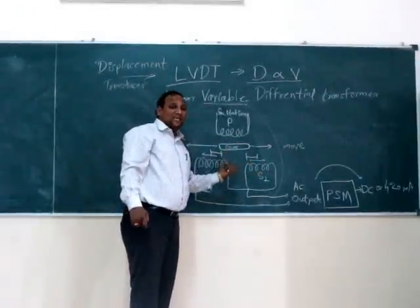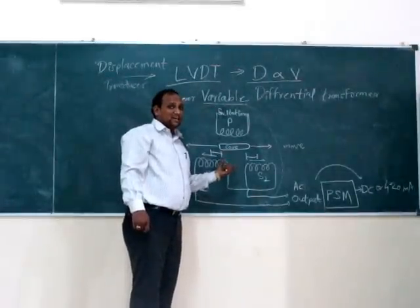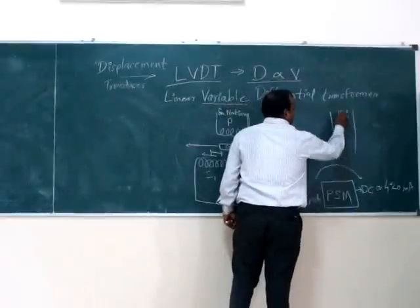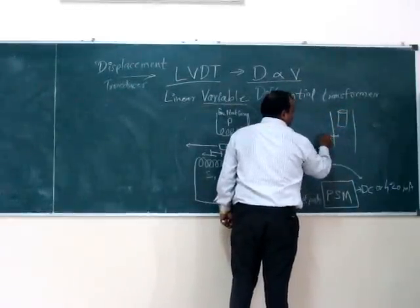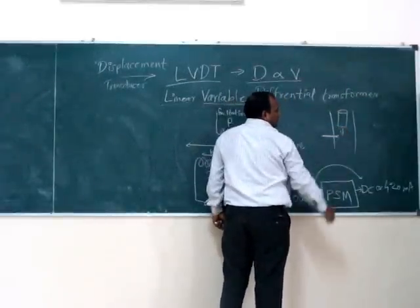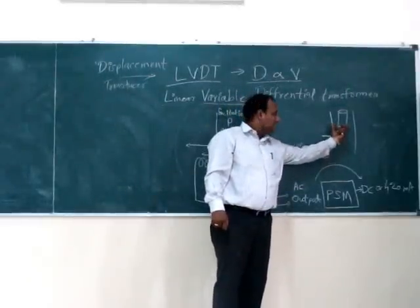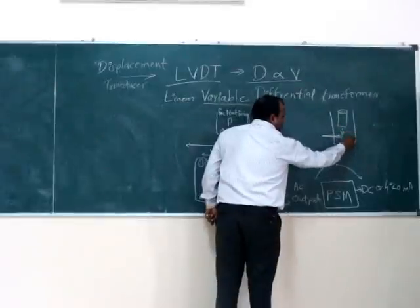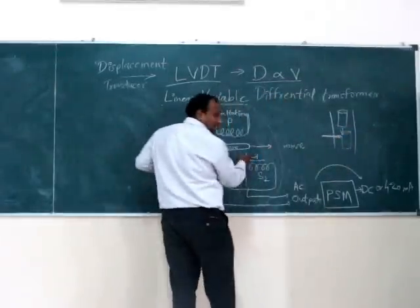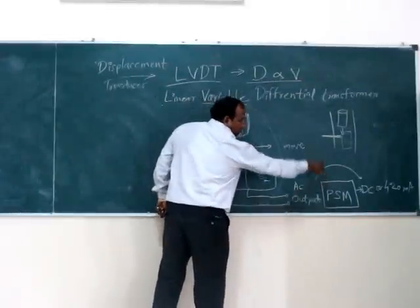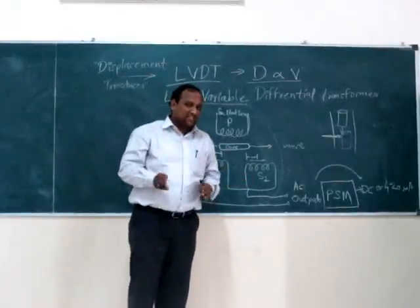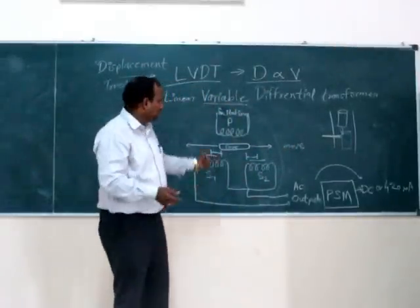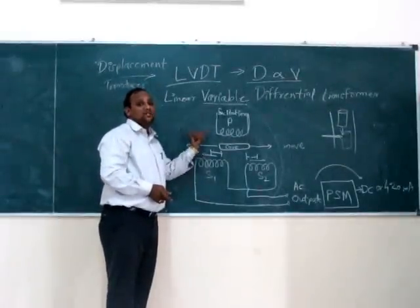Where is the application of this LVDT? Suppose on a rack, different bottles are moving. The iron core of the LVDT is placed such that when a bottle moves along the rack and comes across the iron core, it will push it up a little bit. That movement generates a corresponding voltage, allowing us to detect the bottle. Wherever displacement is to be measured and fed to another circuit or just measured, we can use this LVDT, which is a type of displacement transducer.